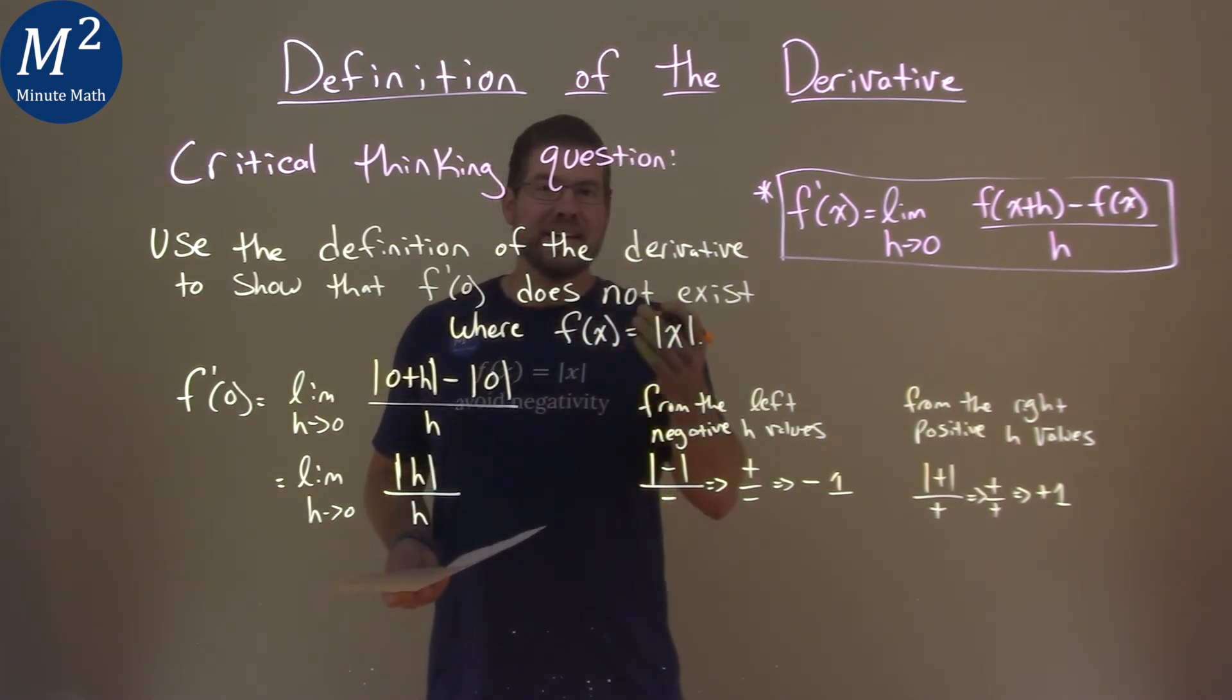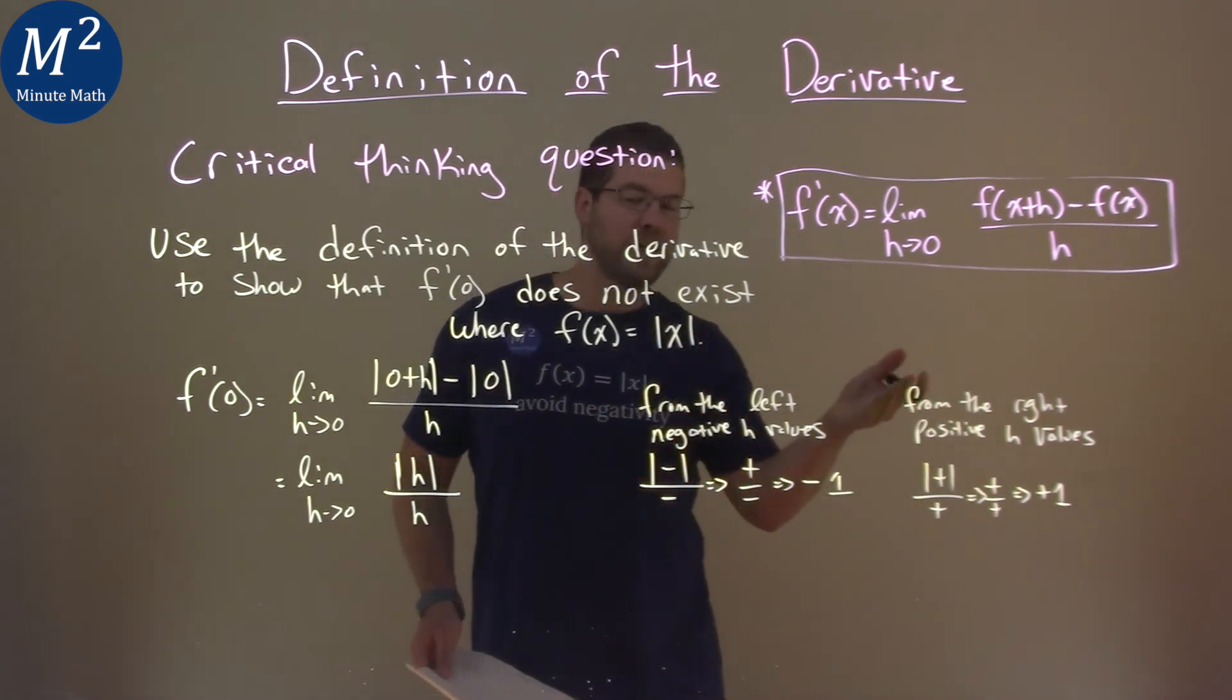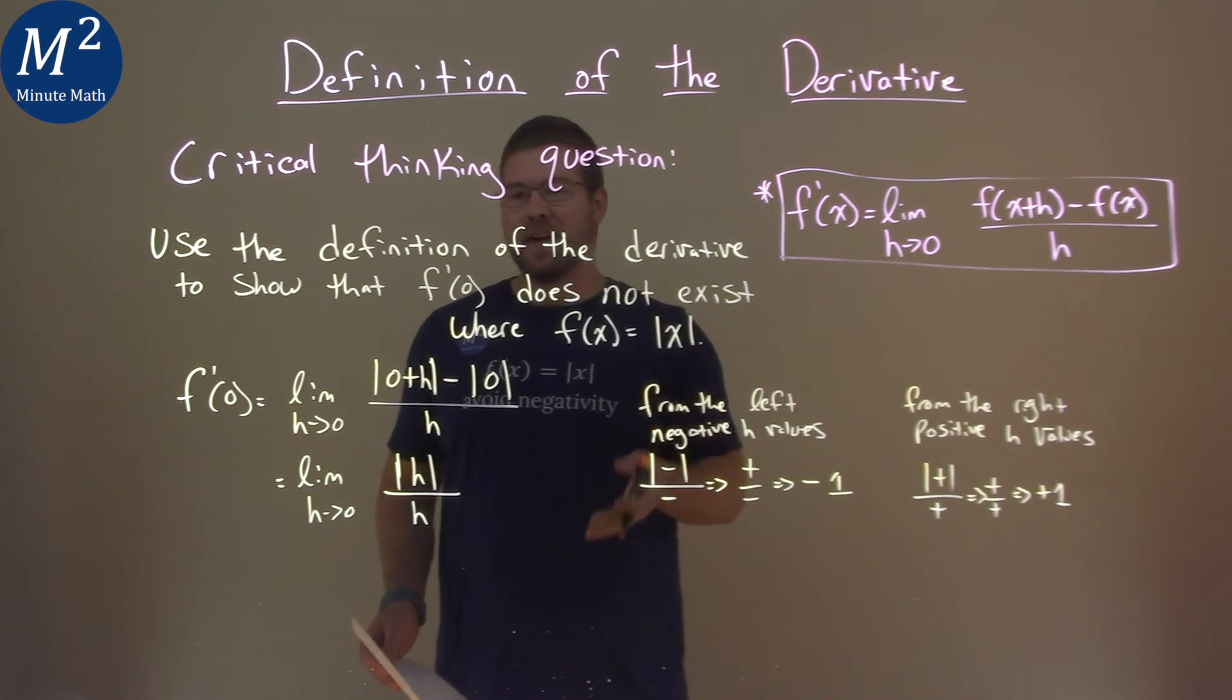So f prime of zero doesn't exist here because the limit's left and right-hand side are not the same, so our derivative does not exist there.